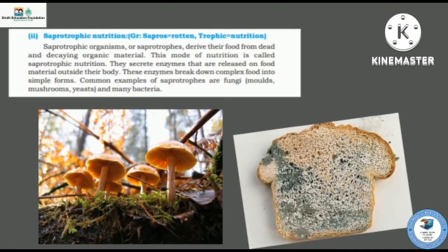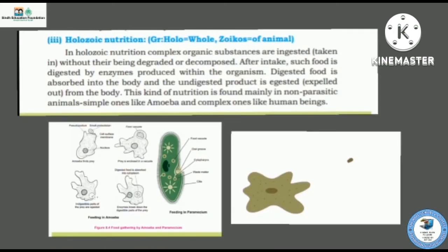Another type is saprotrophic nutrition, in which organisms depend upon dead and decaying organic matter for their food, like mushrooms.